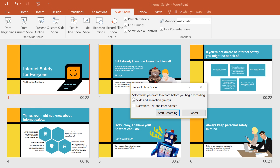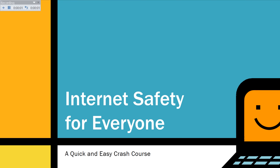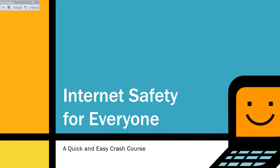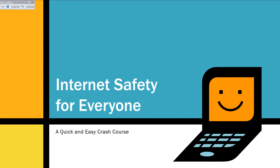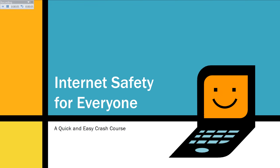Check what you want to include — for me, timings and narration, because I do have a mic. Then click Start Recording and be ready to perform your presentation as soon as it begins. Make sure to speak clearly into the mic if you're recording narration. When you're ready to move to the next slide, click Next or use the arrow key just like before.